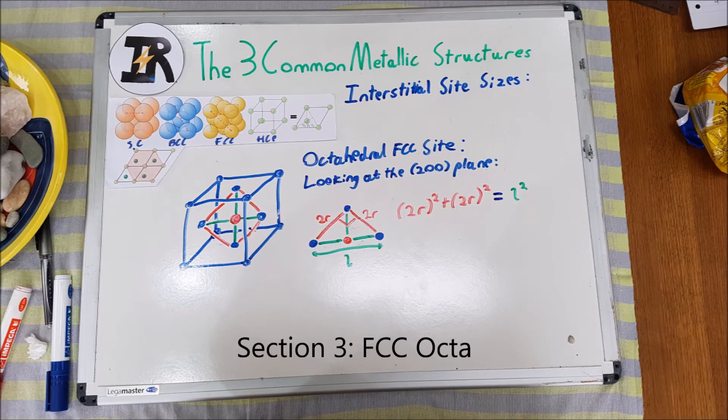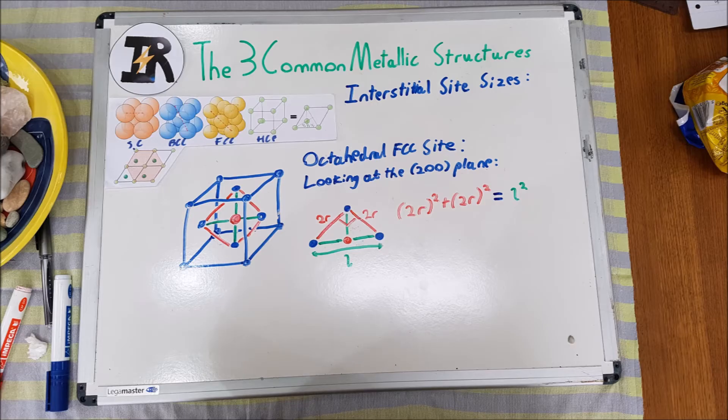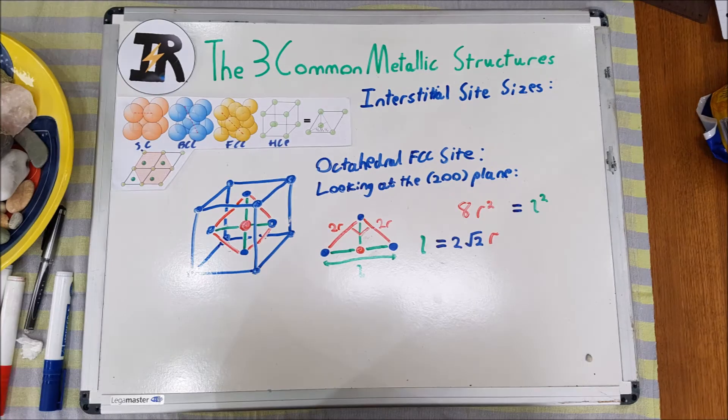To begin to obtain the size of the FCC octahedral hole, I recommend viewing the FCC structure along the 200 plane. If you look back to my non-reduced diagram, you can see that the hole lies at the center of the unit cell, and a triangle like that drawn on the whiteboard below can be formed, with sides 2R, 2R, and L. The angle between the lengths of 2R is equal to 90 degrees, and thus we can use Pythagoras' theorem, giving the value of our length L to be equal to 2√2R, where R is the FCC matrix atom radius value.